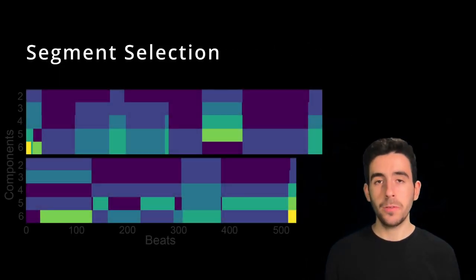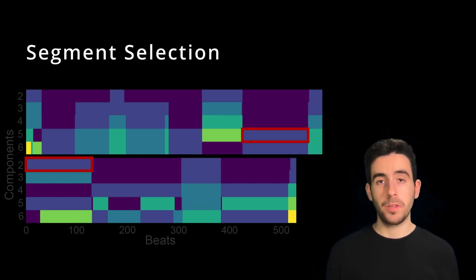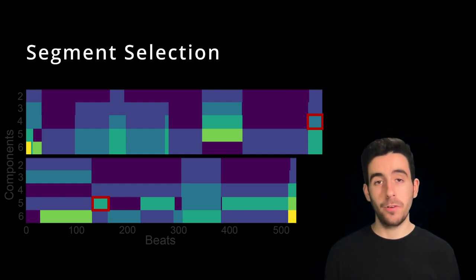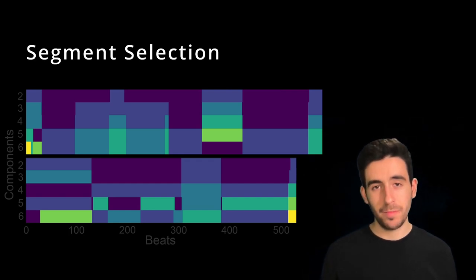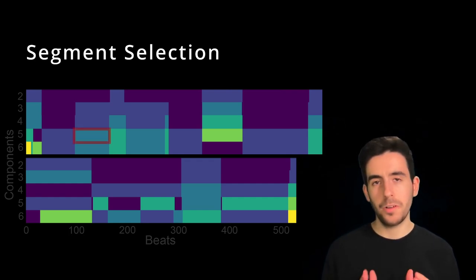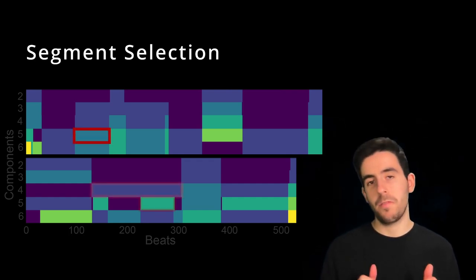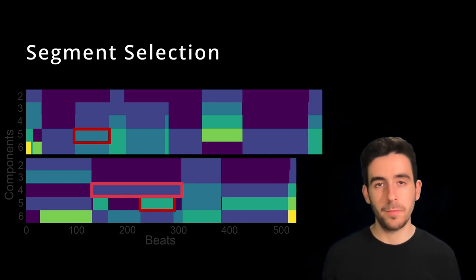After the structures are computed, we move to the second part. We select all pairs of structural segments across the hierarchies of both pieces that have the same number of beats. Now, this is more flexible than it seems. We aren't just comparing a segment from the same granularity of analysis to another, but rather across all hierarchies. This means that we might be comparing a smaller structural segment with part of a larger structural segment of another piece.